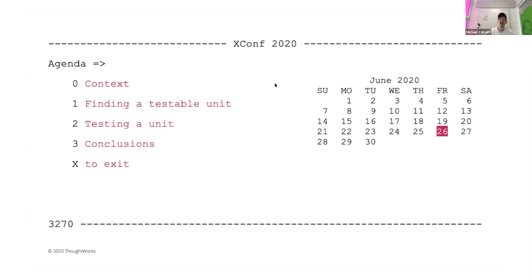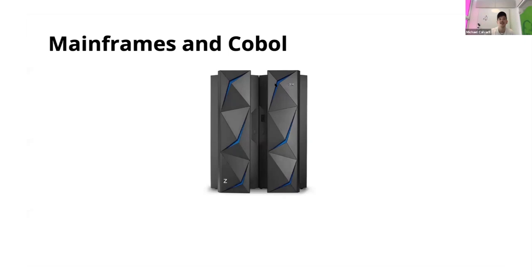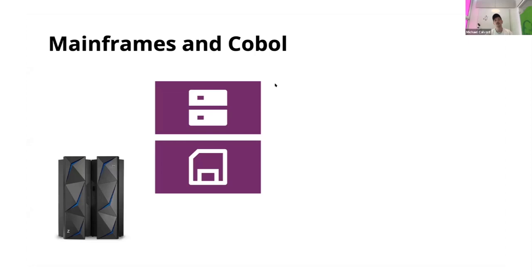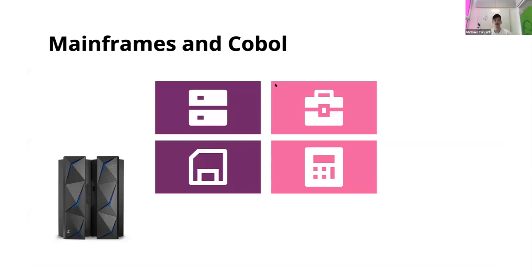Let's head straight into the context. What is the mainframe? Mainframes are these large computers — they're very robust, basically built to survive earthquakes. They're the last thing that will run in the apocalypse, if you want to say it like that. They're built to be compatible with older systems, so with new releases of the IBM mainframe you can still program them with punch cards if you buy the right adapter. They usually run COBOL programs, which is a business-oriented language, very good for depicting business cases but not very good for complex calculations.